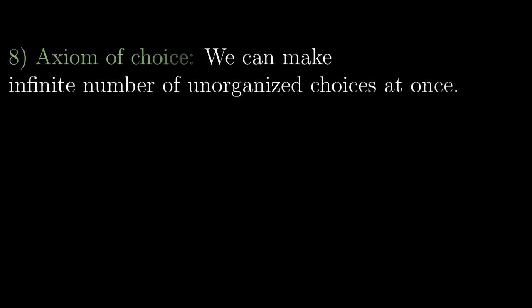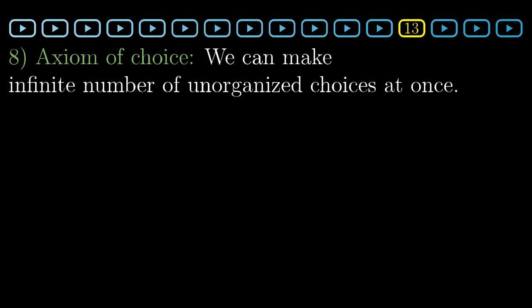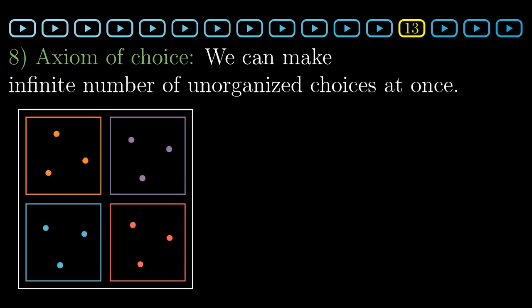One of them was quite controversial in the past, now it is widely accepted and we will look at it in detail in chapter 13. Vaguely speaking, it states that we can make an infinite number of unorganized choices at once. Formally, the statement is as follows. Whenever we have a set of non-empty disjoint sets, we can take exactly one element from each of these sets and form a new set out of them. At first glance, it doesn't look very spectacular and in many cases we can actually use other axioms instead of choice. But when we need to make an infinite number of unorganized choices at once, we don't really have a better option.